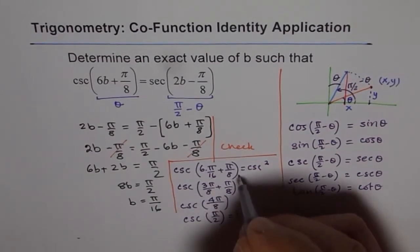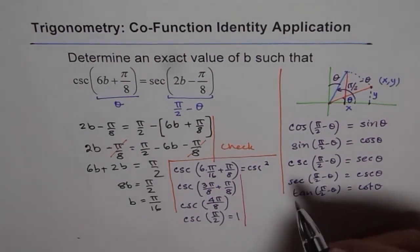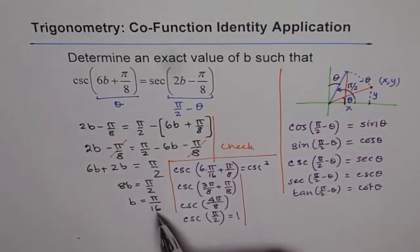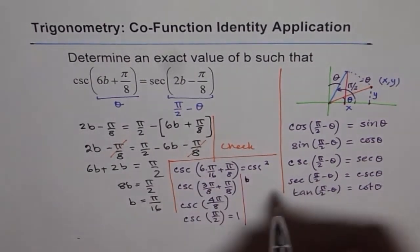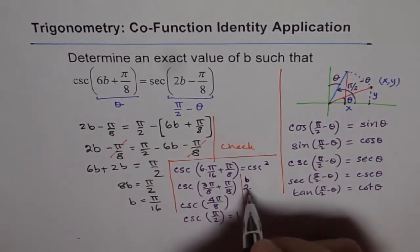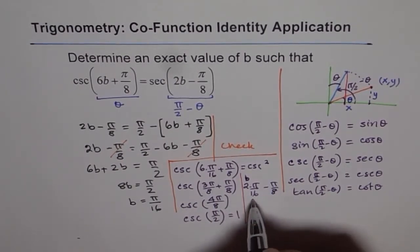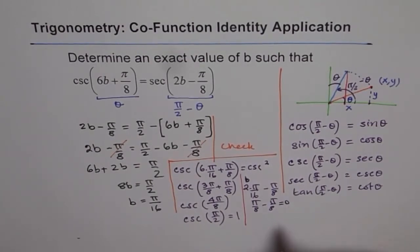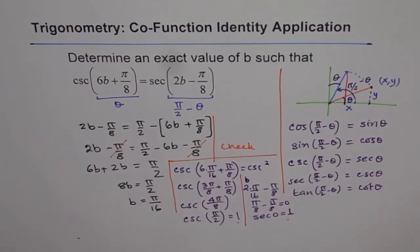Let us find what is 2b minus π by 8 for b equals π by 16. We have 2 times π over 16 minus π by 8. That becomes π by 8 minus π by 8, which is 0. What is secant of 0? Secant of 0 is also 1. So both left side and right side are equal. That is the check. Therefore, we can conclude that our answer is b equals π by 16.